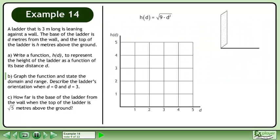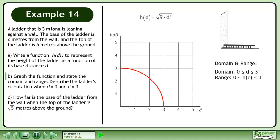Write the height function we found in Part A and set up the graph. Draw the graph. The domain is between 0 and 3 inclusive and the range is between 0 and 3 inclusive as well.